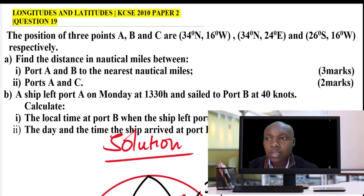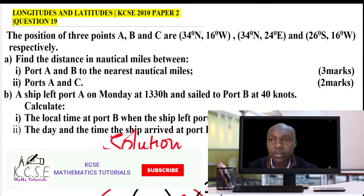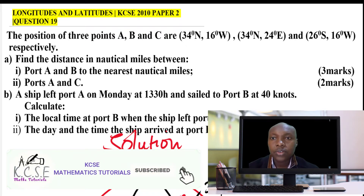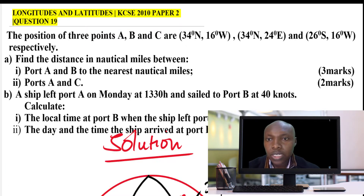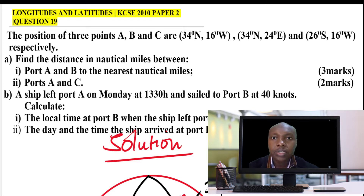The question reads: the position of ports A, B, and C are 34 degrees north 16 degrees west, 34 degrees north 24 degrees east, and 26 degrees south 16 degrees west respectively.